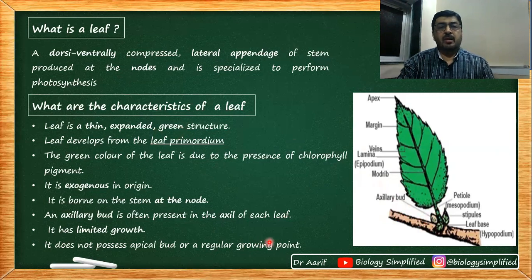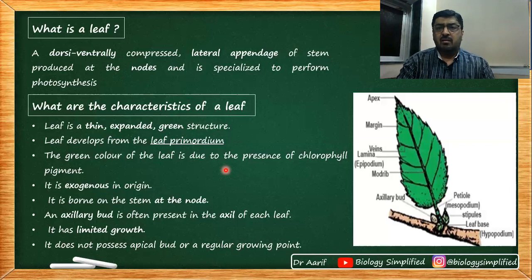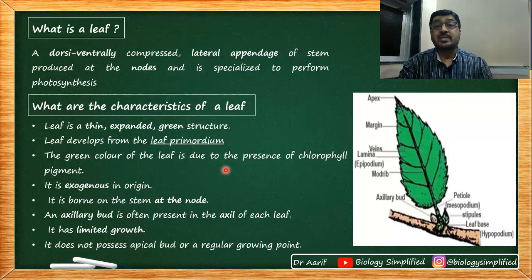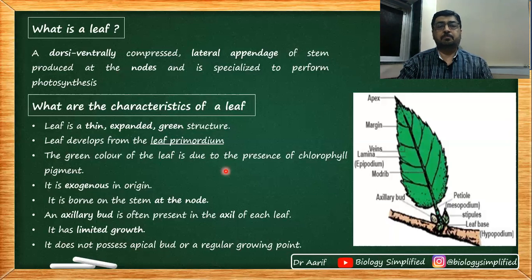Characteristics of a leaf: it is a thin, expanded, green structure. It develops from the primordium, which is a part of the apical meristem from which the leaf develops. In the next chapter on anatomy, we will discuss meristematic tissue. The apical meristem at the tip has a small region that starts to develop as a leaf — that part is called the leaf primordium. The green color is due to the presence of chlorophyll pigment.